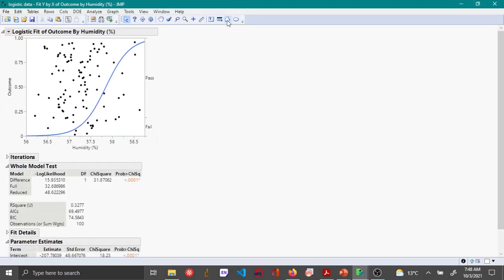JMP automatically does the logistic regression. Here you can see the logistic curve, and all the dots or points above the logistic curve are pass and everything below are fail.